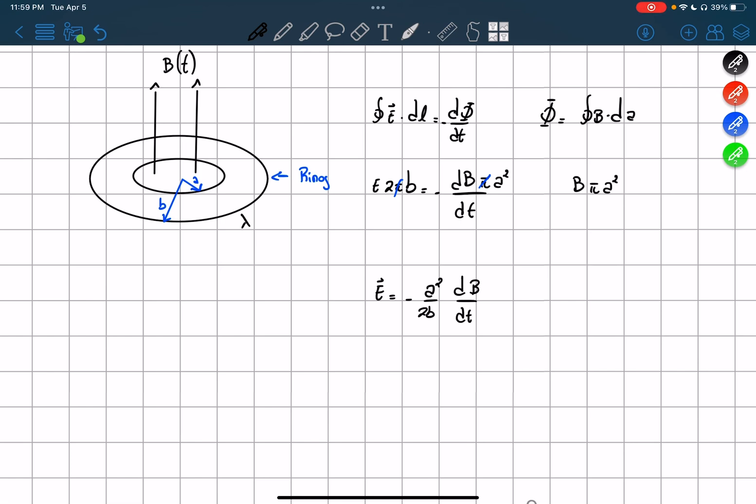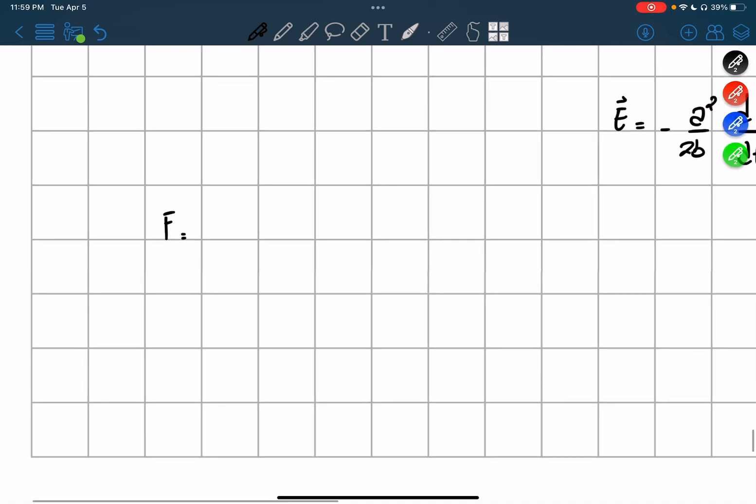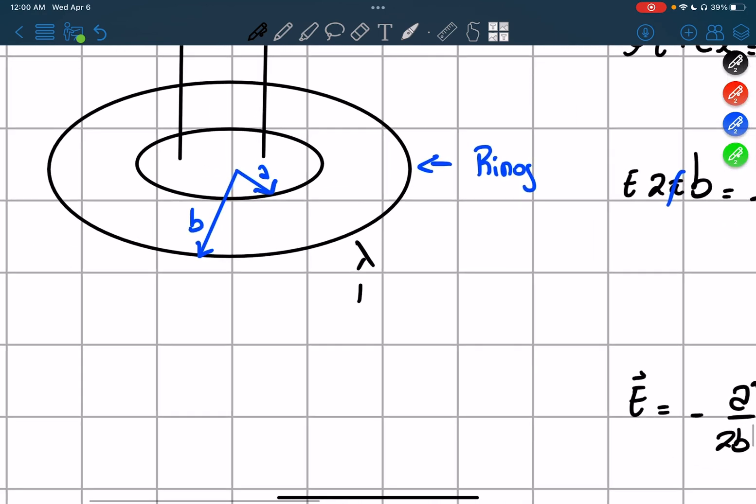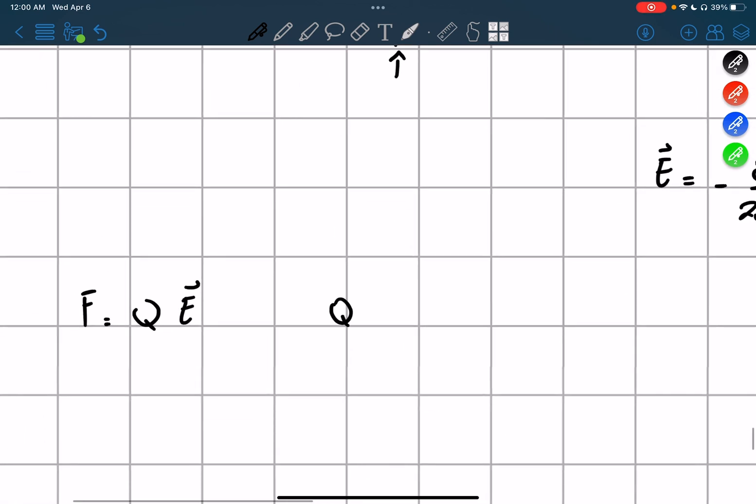And now we have to remember one thing. We're going to have that the torque, actually, I'll do one step before. The force that is on this, the electric force, is equals to Q times E. Well, what is Q? Q is going to be the linear charge density times the circumference, so we can say Q equals lambda times 2 pi B.